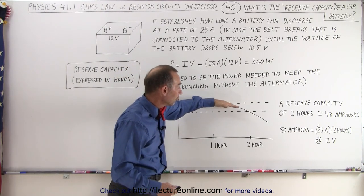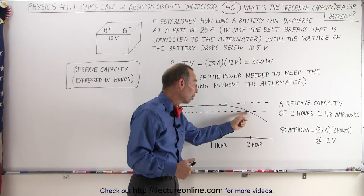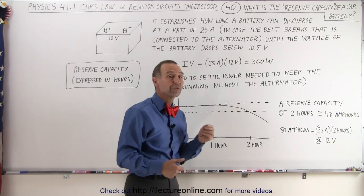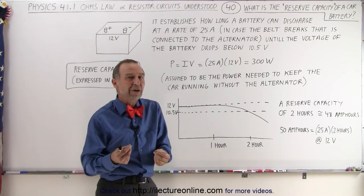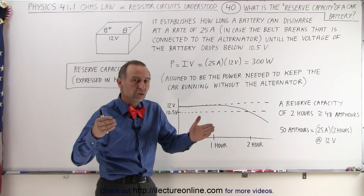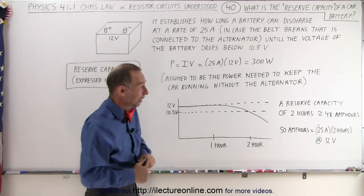For an hour and a half, then the voltage begins to drop as the battery is discharging. And then after two hours, the battery drops below 10.5 volts, which is assumed that it can no longer sufficiently provide the amount of current and voltage required to run the car. At that point, you probably need to pull over and call for help.